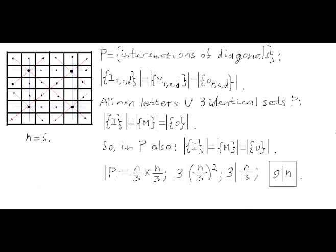If we recall that this number equals (N/3) squared, and N/3 is a positive integer, it follows that N/3 is also divisible by 3, which means that N is divisible by 9. Obviously, a table with N equals 6 doesn't have such a property, because 6 is not divisible by 9, so it's impossible to fill it with letters I, M, and O following the rules of this problem.